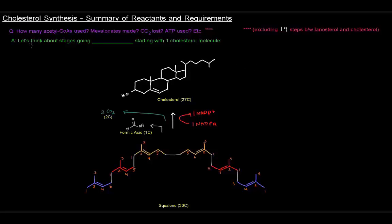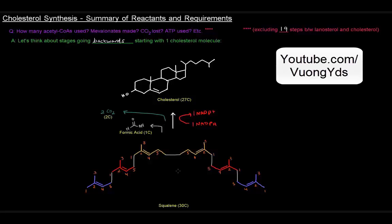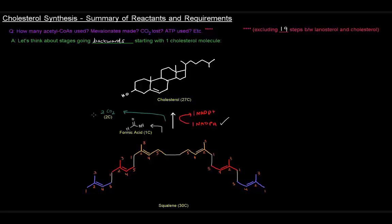So let's do this. Let's think about the stages going backwards, starting from one cholesterol molecule. So we have one 27-carbon cholesterol molecule here, and it came from squalene. And in this process, we used 18 O2, and we lost three carbons, two as carbon dioxide and one as formic acid here.